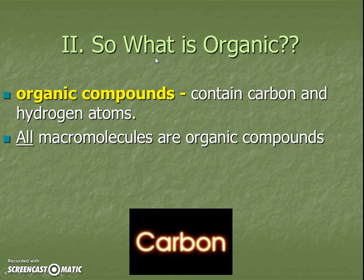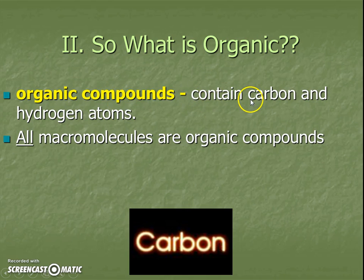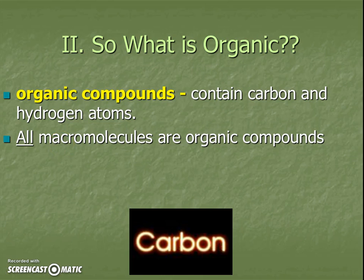Second subheading is: what is organic? We might have heard of organic food, but this is going to be a different type of organic — it's what we call organic in science class. We're talking specifically about organic compounds. They're going to have to contain two particular types of atoms: carbon, especially, and also hydrogen atoms. All the different macromolecules — these large molecules we'll be talking about today — are going to have both carbon and hydrogen, and therefore they are all organic compounds.